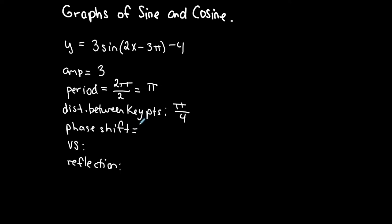I know there's a phase shift if I have something subtracted or added to the x term inside the parentheses. In this case I have minus 3π. A phase shift is the same as a horizontal shift, and we always take the opposite of the sign. Since it's negative 3π, my phase shift is positive 3π divided by the coefficient of x, which is 2 — so 3π over 2.